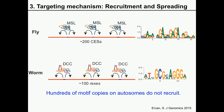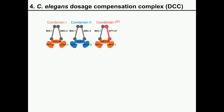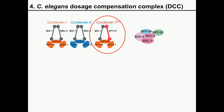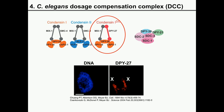We wanted to address how specificity of transcription factor targeting occurs, using X-chromosome dosage compensation in C. elegans. In C. elegans, the core of the dosage compensation complex is a condensin complex, which interacts with five other proteins mainly for specific recruitment to the X-chromosome. The Meyer group has shown that different members of the dosage compensation complex localize to the X-chromosome, as shown in immunofluorescence studies.